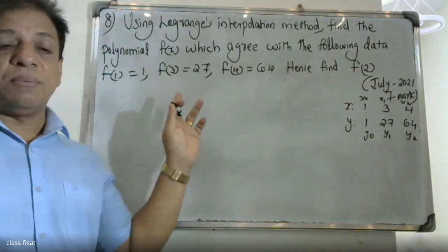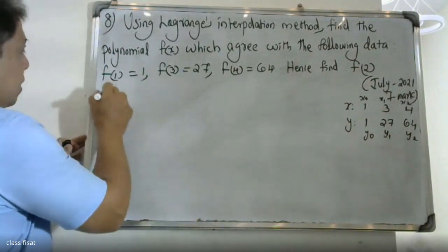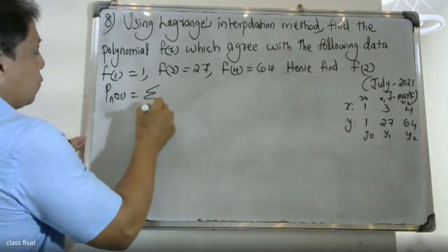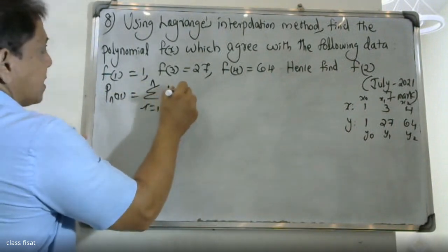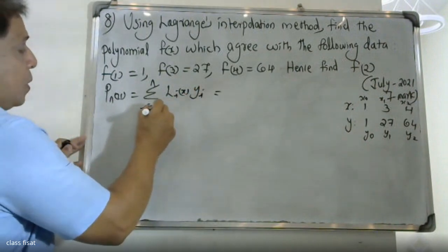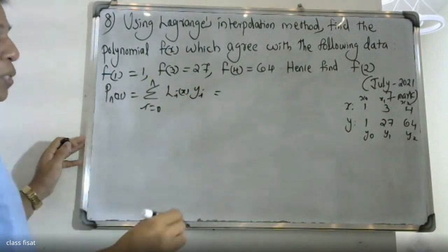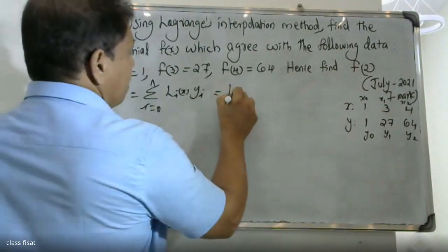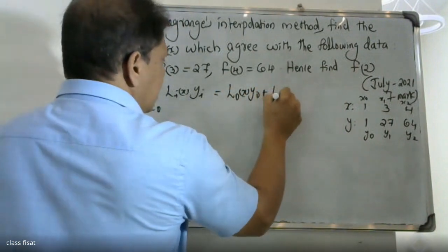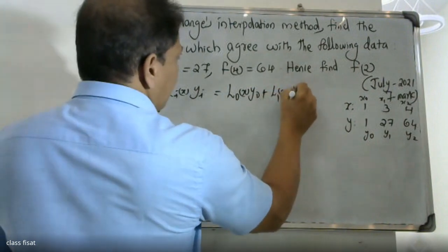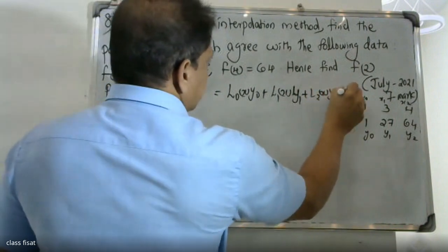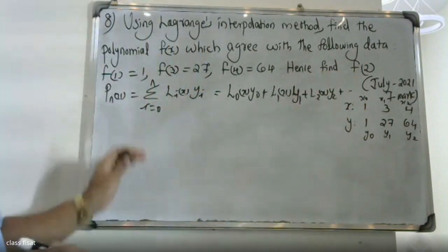The Lagrangian interpolation formula is: Pn(x) = sigma i=0 to n of Li(x)·yi. Expanding this, we get L0(x)·y0 plus L1(x)·y1 plus L2(x)·y2.